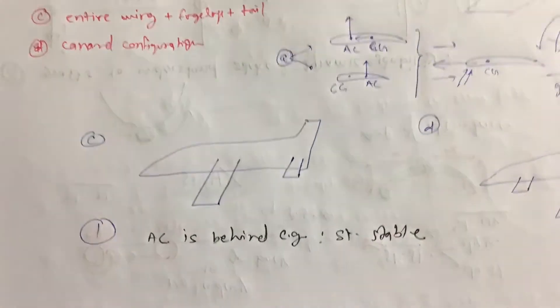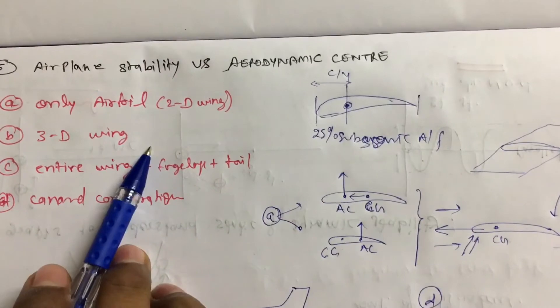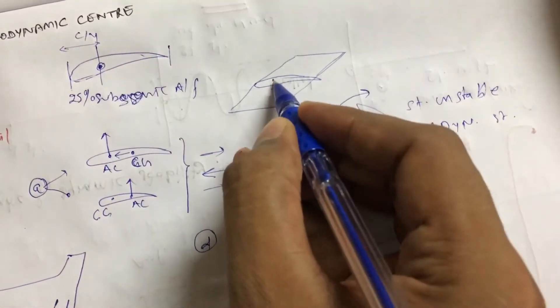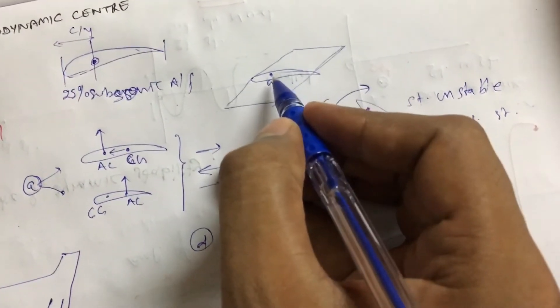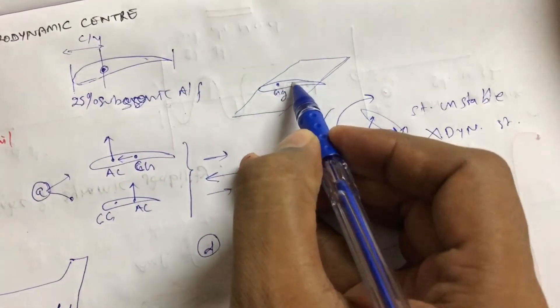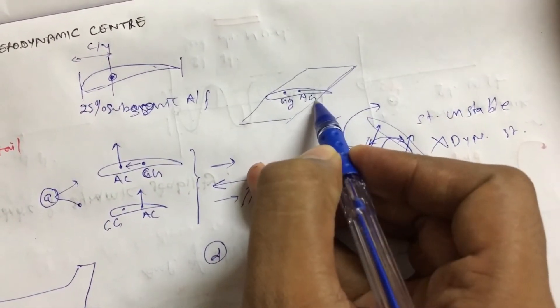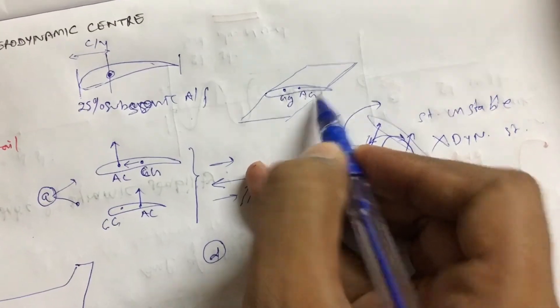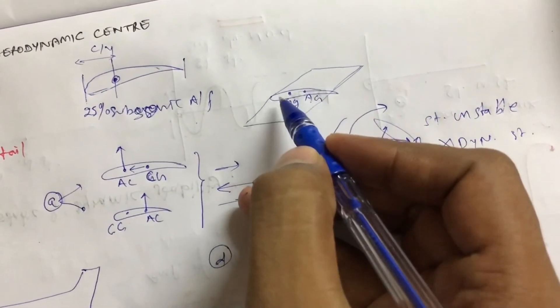Same thing we have to check in a 3D wing also. If you have a 3D wing and this is your CG, then by the same logic, your AC must lie behind the CG. Then only it will have a tendency to come back to its original position.